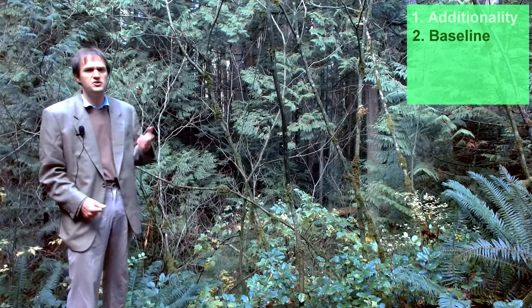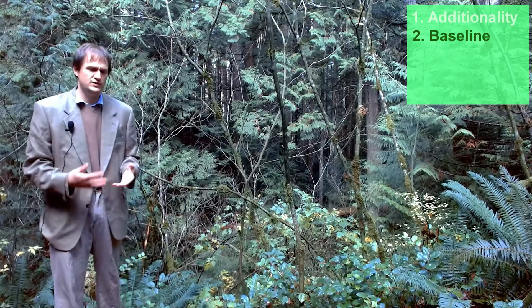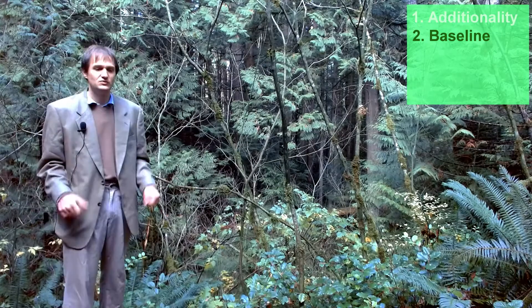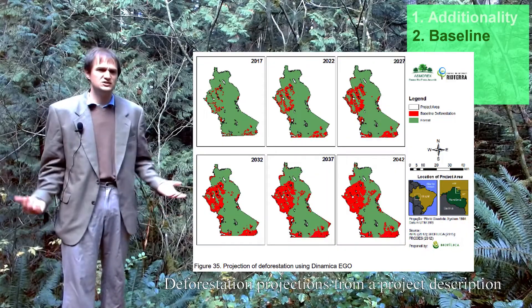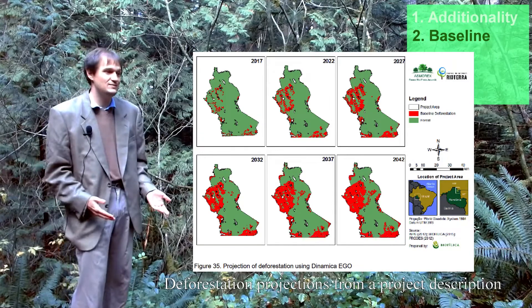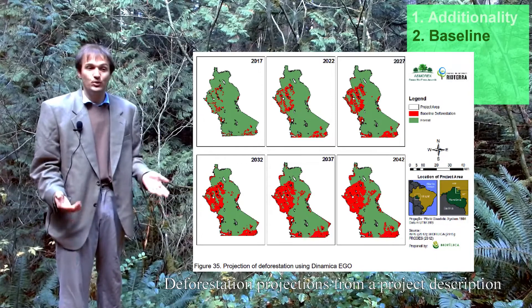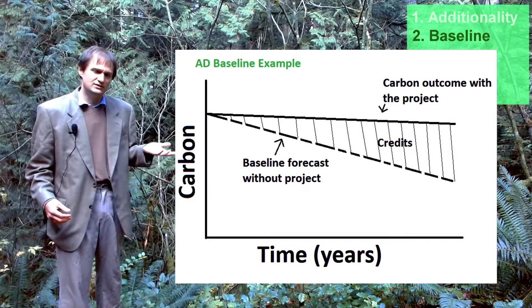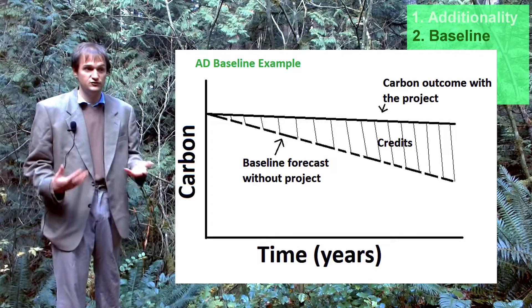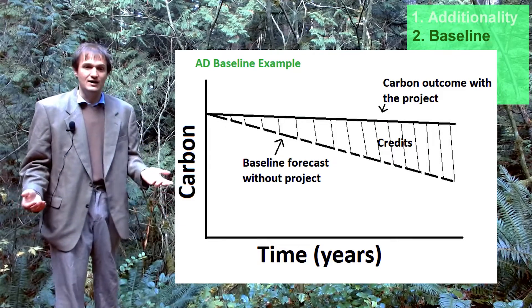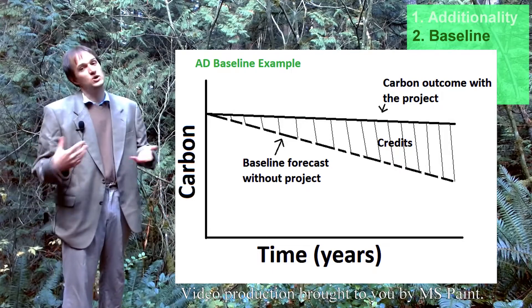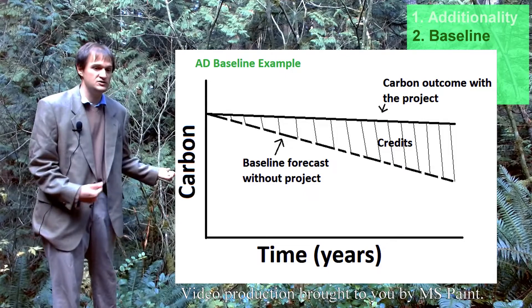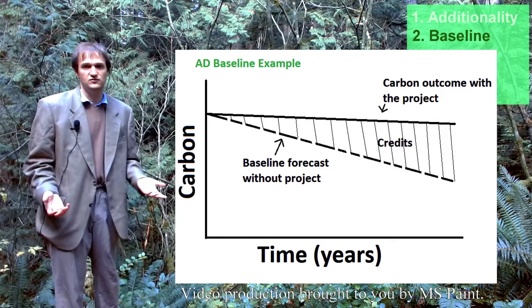The second pillar of a forest carbon project is called the baseline. The baseline is basically an alternate scenario that describes what would have happened on the project if the project didn't exist — it's kind of a subcomponent of additionality. For example, in the case of avoided deforestation, maybe only 20% of the project area would have been deforested, so we only want to receive credits for that 20%. Projects are credited for the difference between what actually happened and what would have happened.